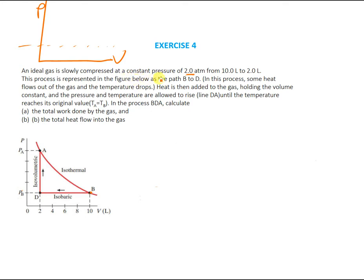This process is represented in the figure as the path B to D. In this process, some heat flows out of the gas and the temperature drops. Heat is then added to the gas while holding the volume constant — that is the path from D, where the pressure and temperature are allowed to rise, until the temperature reaches its original value. So the temperature at A equals the temperature at B — that is an isothermal process.